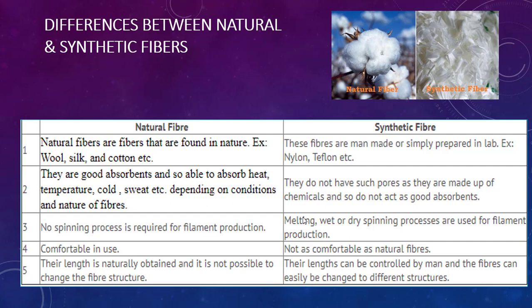In contrast, polyester has a moisture regain of only 0.4 percent — not even 1 percent. Even if polyester is kept in a moist atmosphere, it can only regain up to 0.4 percent moisture. This is the biggest drawback of man-made fibers — most are less absorbent. Regarding spinning, the process of making continuous filament yarn is completely different for natural fibers compared to synthetic fibers.